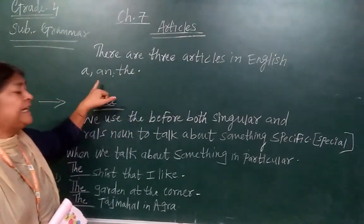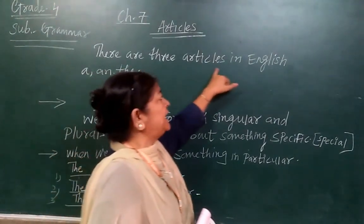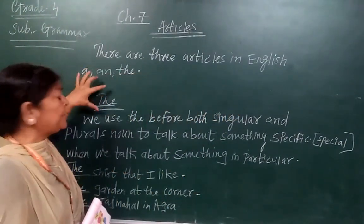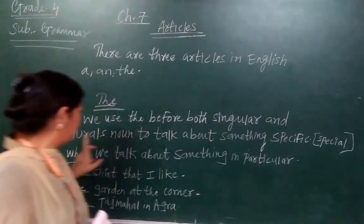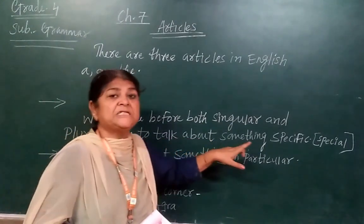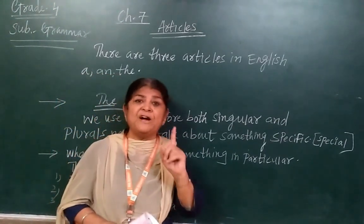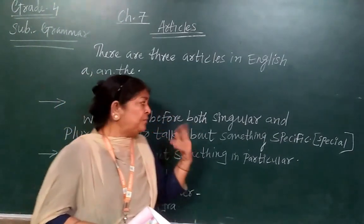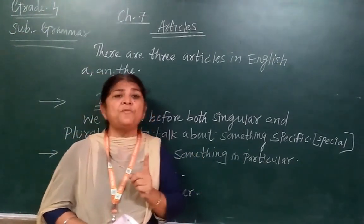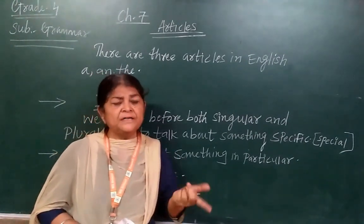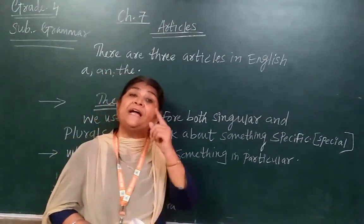There are three articles in English: A, An, and The. We use 'The' before both singular and plural nouns to talk about something specific. Singular means one person or one thing. Plural means more than one. For example, 'boy' is singular. If there are two or fifty boys, you write 'boys' — just add S once.